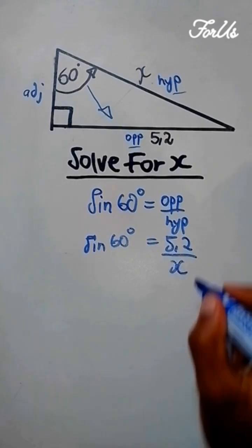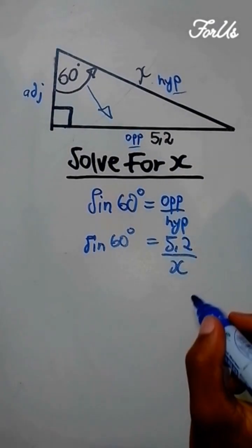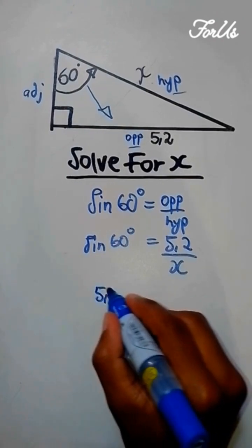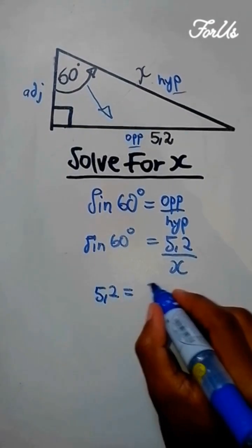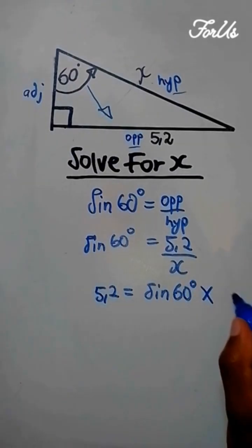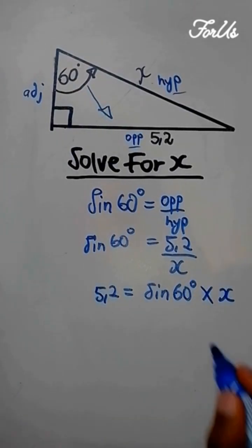And hypotenuse is the side that we want, and next you're going to cross multiply, which should be 5.2 equals to sine 60 degrees multiplied by x.